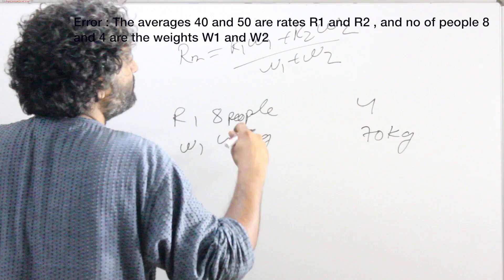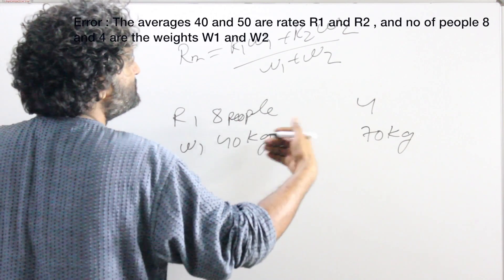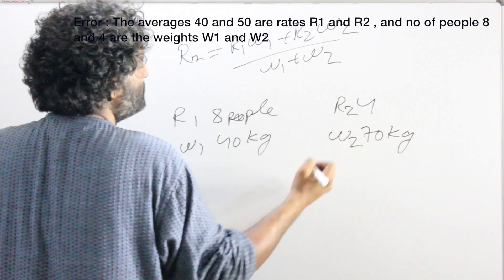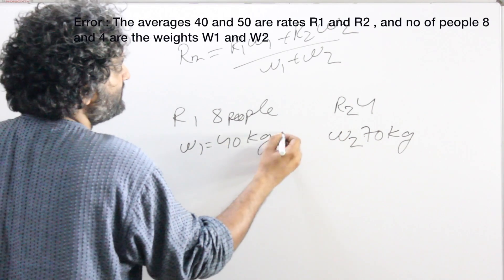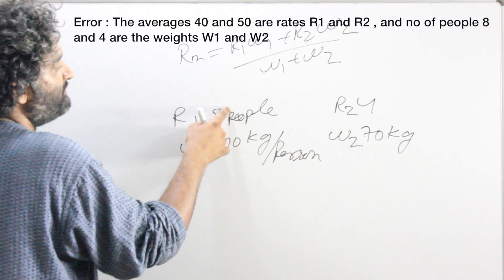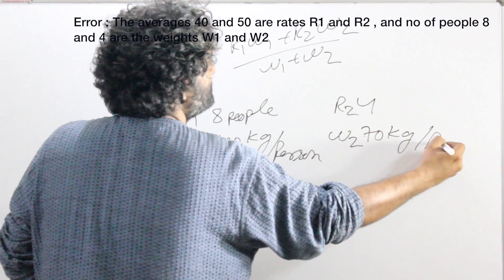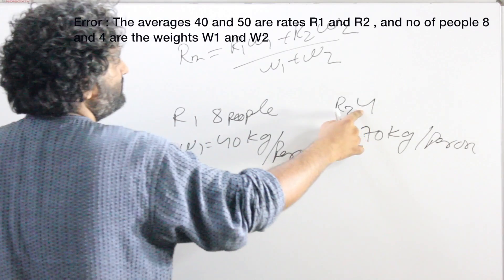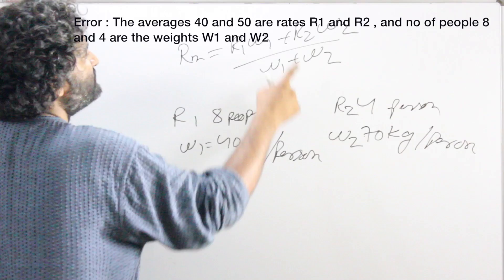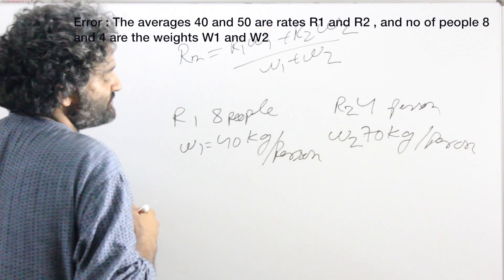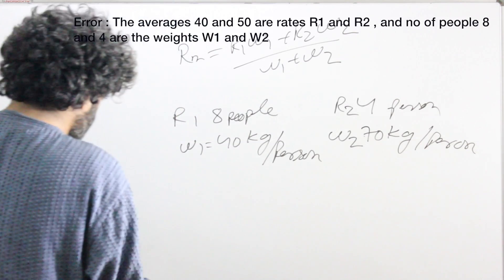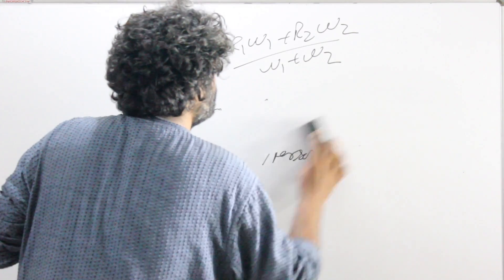So what would be the new average weight if these two groups are combined? This would be your R2 and this would be your weight 2. Because this is 40 kg per person — weight per person — and there are 8 people. This is 70 kg per person and there are 4 people. So if I plug in these values, we want to do it by the visual approach, so we'll see how that works.